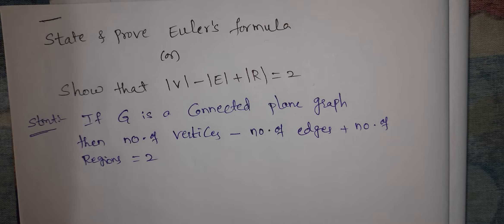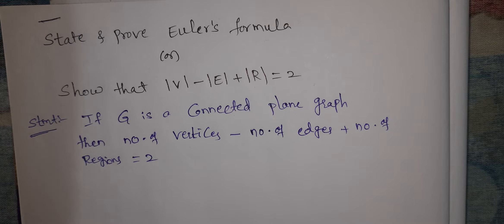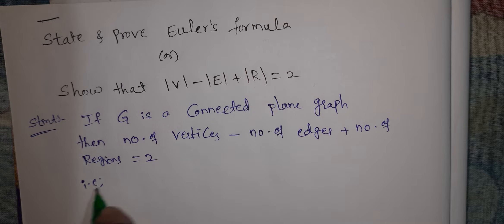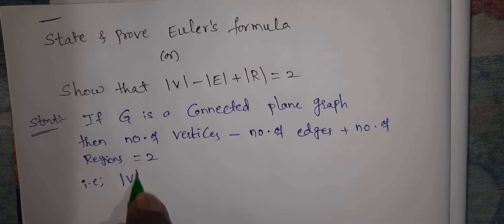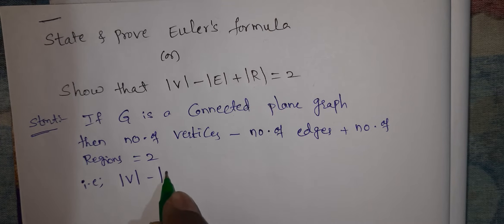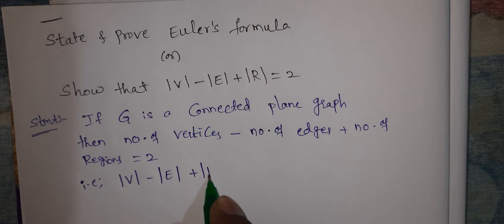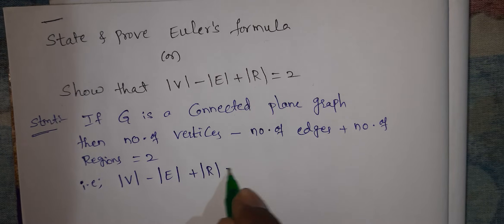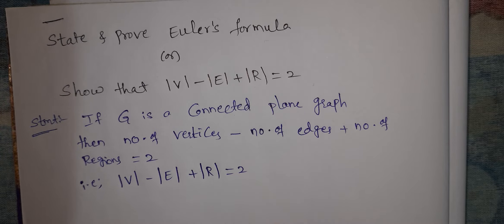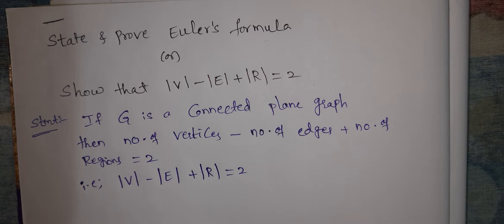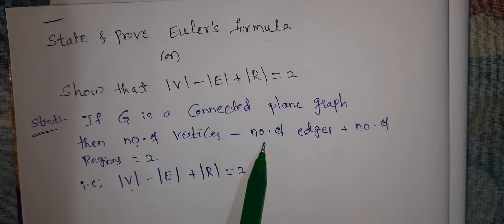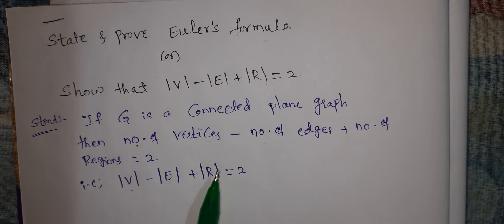This is the statement of the theorem. If G is a connected plane graph, then the number of vertices minus the number of edges plus the number of regions equals 2. That is, V minus E plus R equals 2, where V is the number of vertices, E is the number of edges, and R is the number of regions.